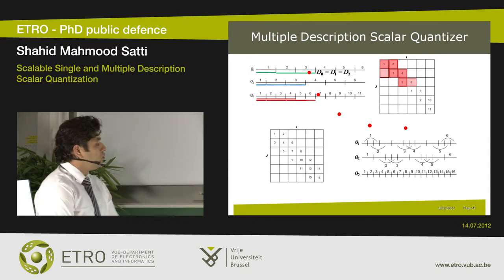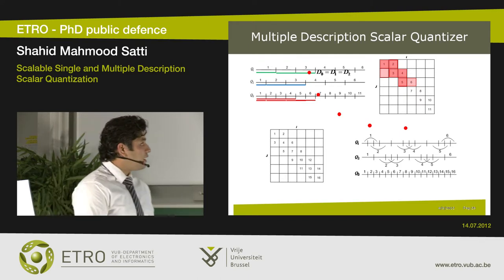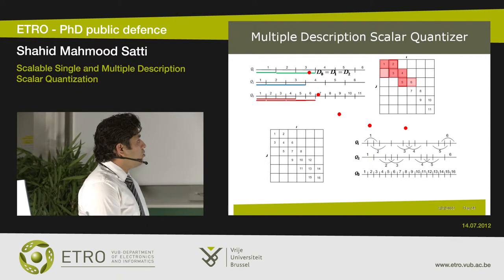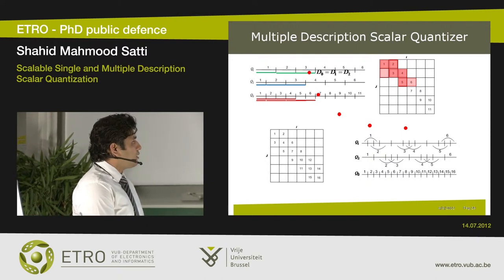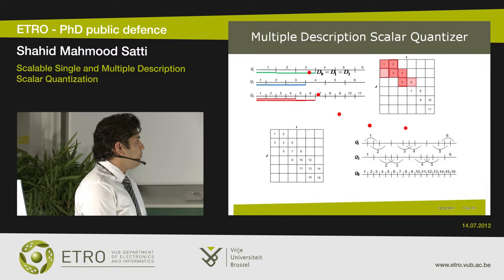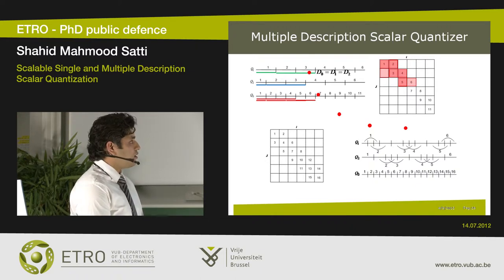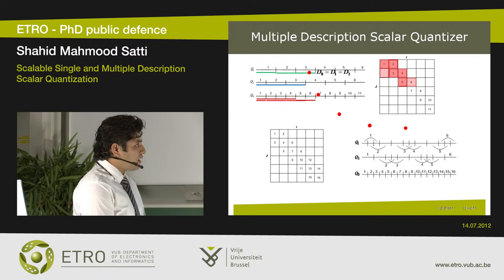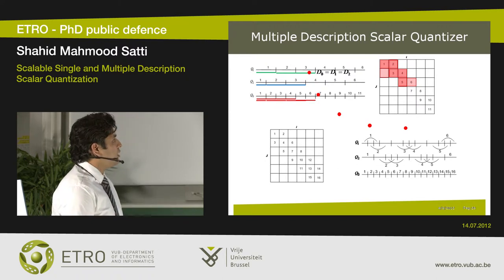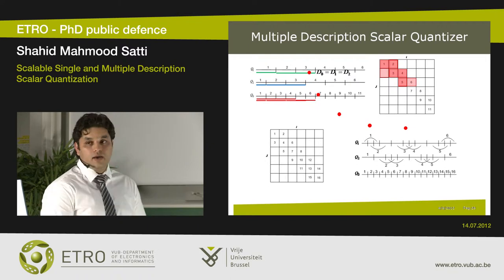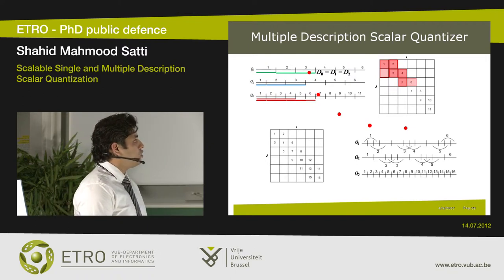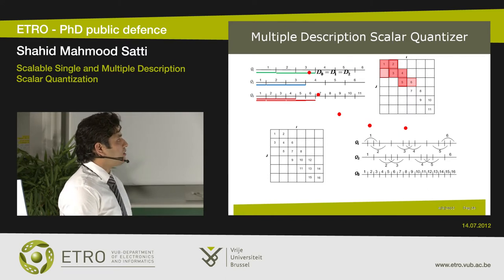In this slide I'd like you to look at MDSQ from a different perspective. Here I've shown the partition cells from the last slide. You can view MDSQ as the central quantizer Q0 together with an associated index assignment matrix. In this case, the index assignment matrix has 11 entries — the 11 entries of the Q0 quantizer — arranged along two diagonals, such that the quantization cells of Q1 are the union of quantization cells of Q0 along the rows of this index assignment matrix.